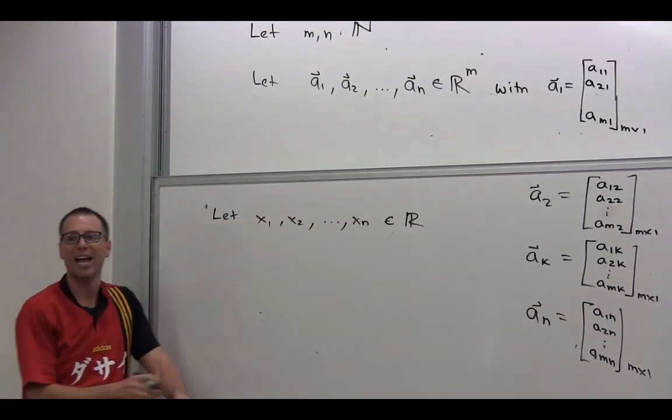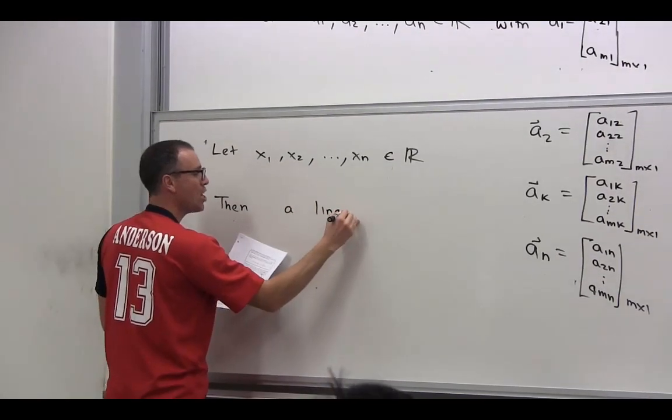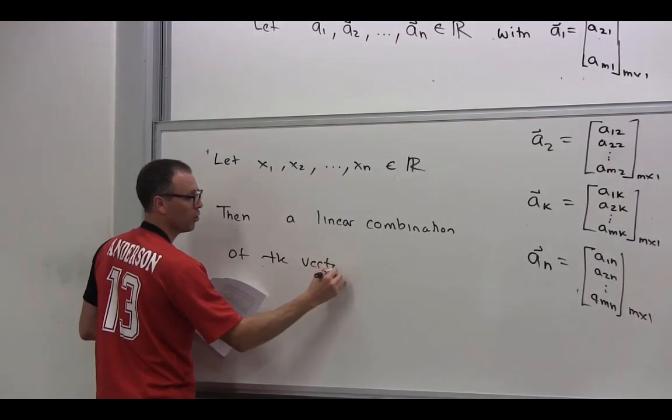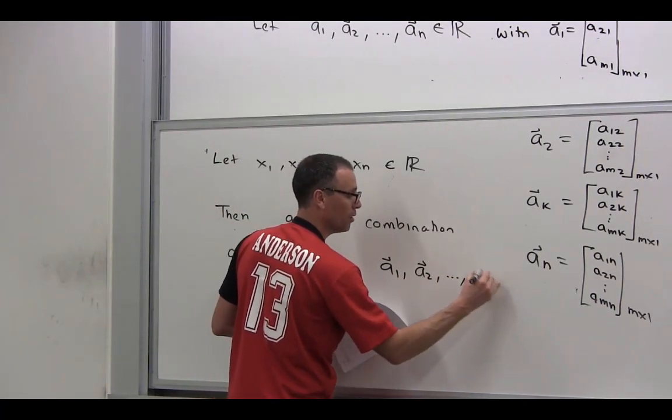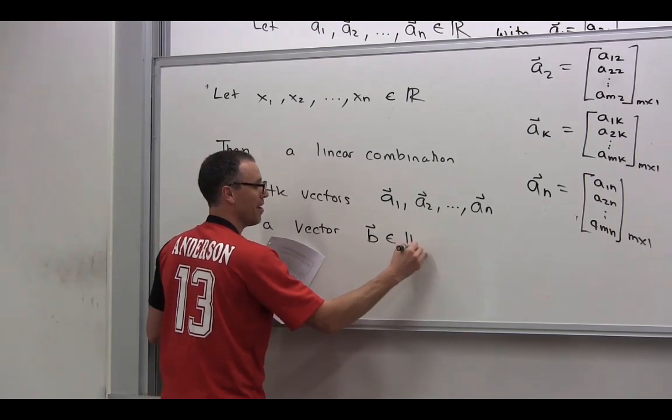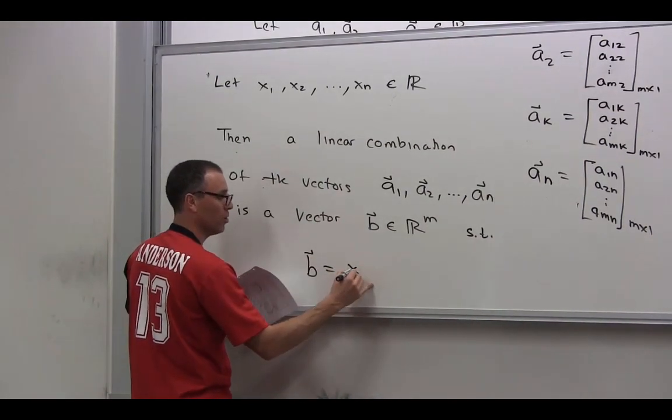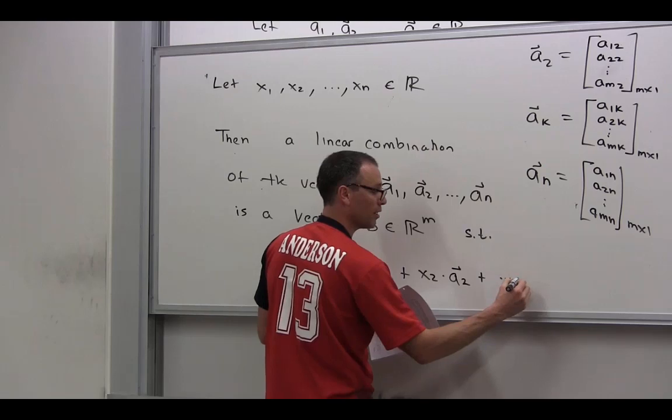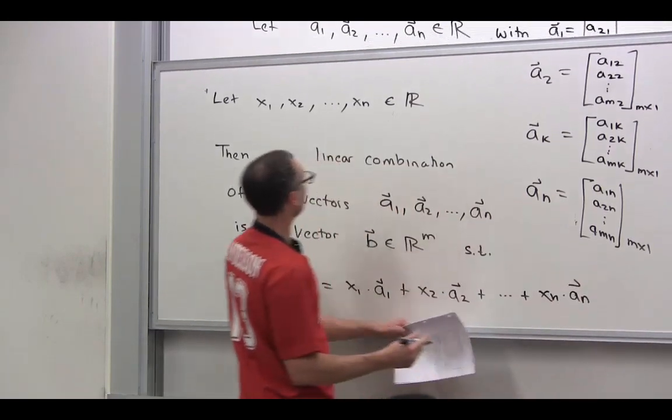Could you guess what x1, x2 to xn is? Scalars. Then, a linear combination of the vectors, which vectors will I combine? Well, which vectors do I have? A1, A2, all the way down to An, is a vector B element of R^M such that B is equal to x1 times A1 plus x2 times A2 plus xn times An.